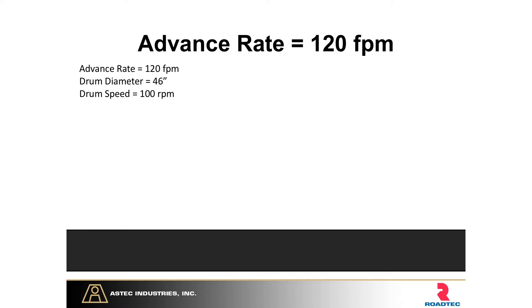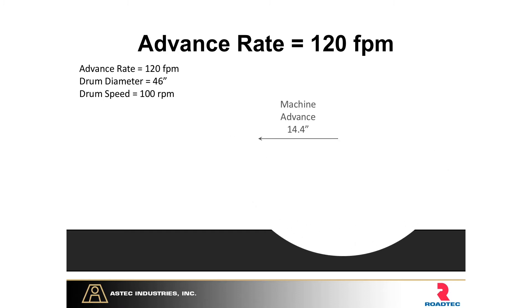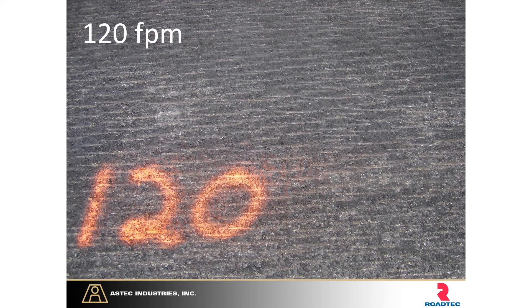Now stepping up to 120 feet per minute, you'll see a big difference. 120 feet per minute is not super common but is certainly achievable by a number of machines. At this point, the machine has traveled over a foot between when one tooth hits the surface and by the time it travels back around to strike again. We've now left over 1.16 inches of residual material behind, and that's when we see our chevrons very pronounced — all that material lining up to make the V.